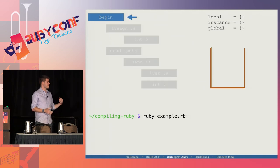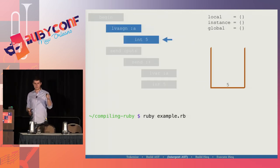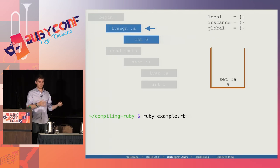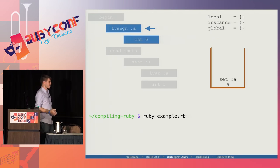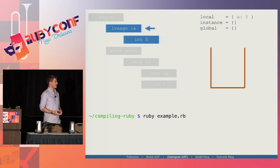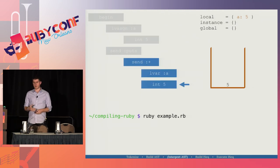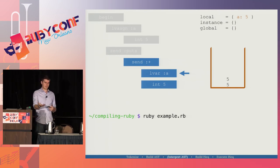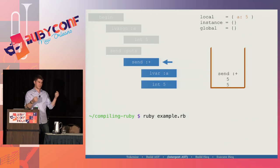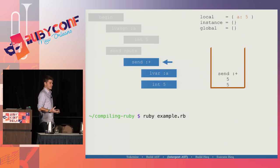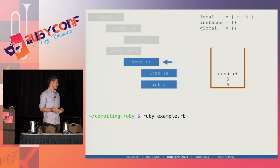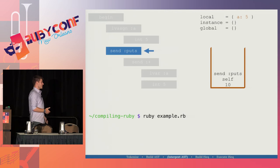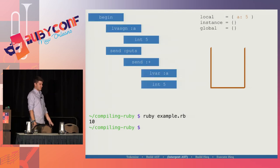So we type ruby example.rb and we run down our tree. We see our integer and we push the integer onto the stack. We see our local variable assignment — we push set-A onto the stack, and because it's a local variable assignment, we pop that off and it goes into the local table. We see integer 5, put that onto the stack, pull local variable A out of the local table and replace it with 5. We send plus to 5 — addition in Ruby is sending the plus operator to whatever object has been called plus on. So then we get 10, that gets pushed onto the stack, we get puts, the implicit receiver self, and we've successfully interpreted our abstract syntax tree.